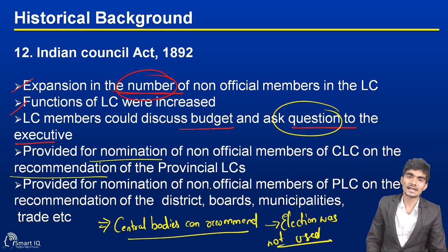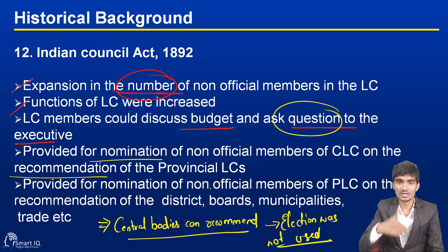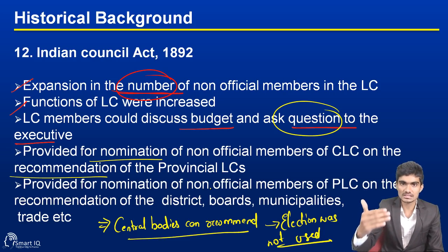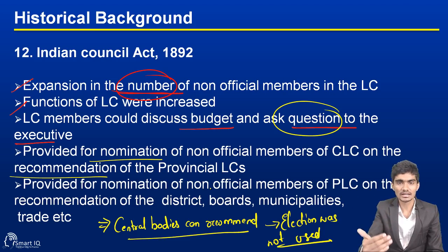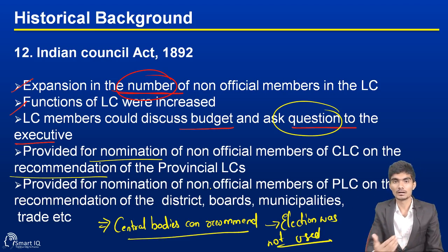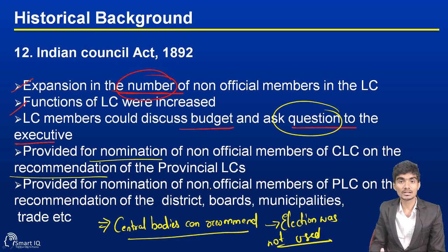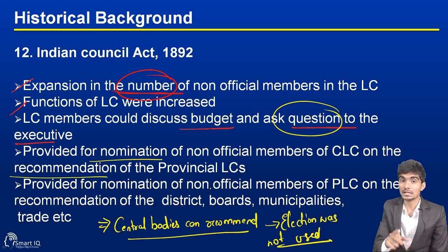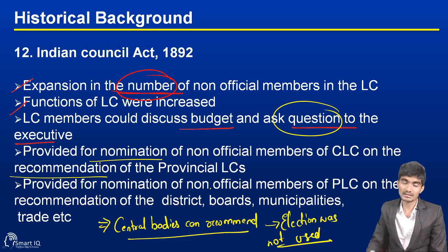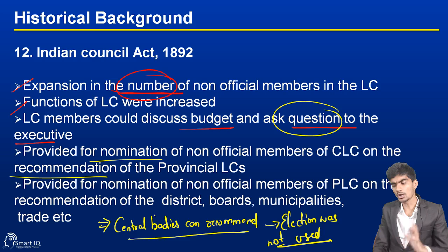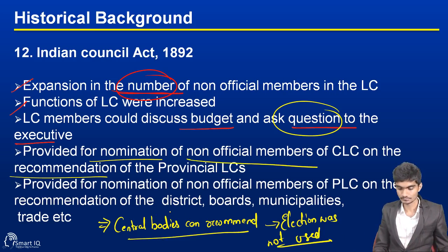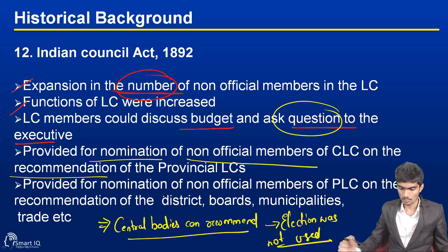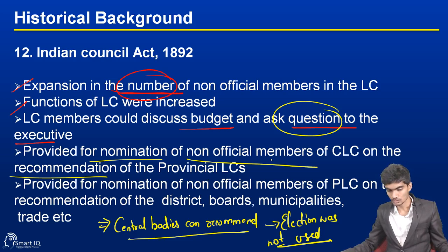Regarding the provincial and central legislative councils, nominations were done by the Viceroy of India. For the central legislative council, the nomination was not based on recommendation in the usual sense, but for non-official members it was recommended — provided for the nomination of non-official members of the legislative council on the recommendation of certain bodies.